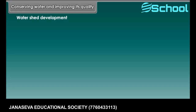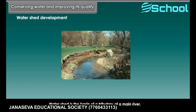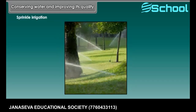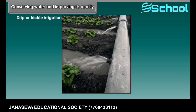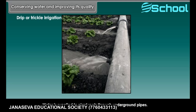Watershed development — a watershed is the basin of a tributary of a main river. Sprinkle irrigation is the most effective and efficient tool of irrigation. Drip or trickle irrigation is another type of irrigation used to conserve water, where water is supplied to plant roots through underground pipes.